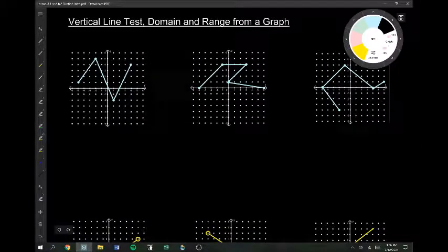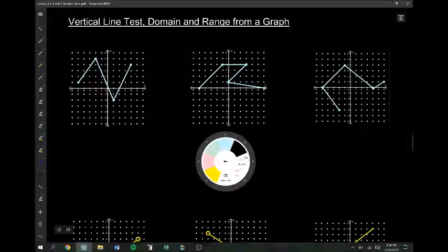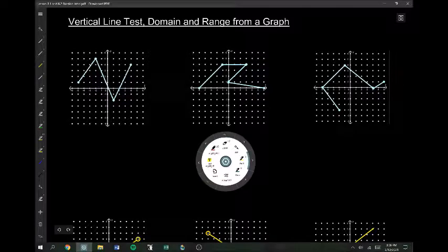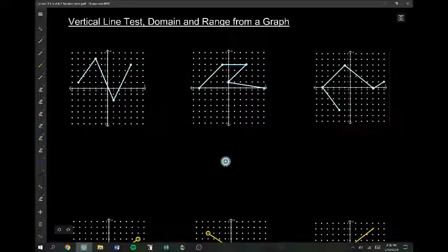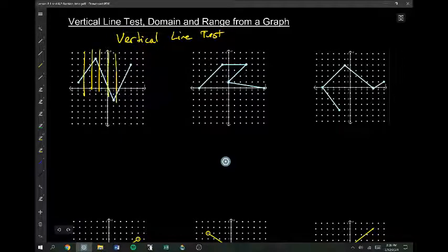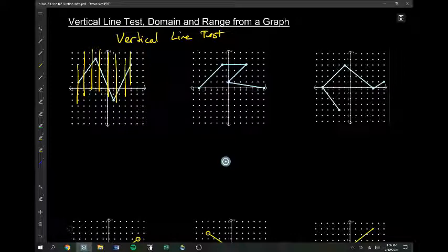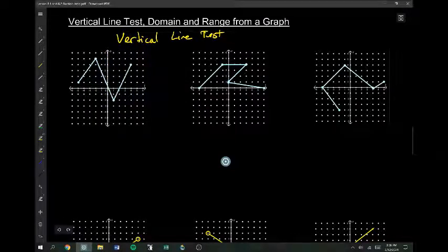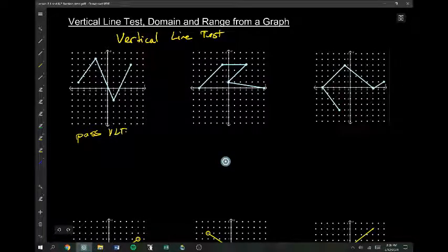Okay, the next thing we're going to do is talk about graphs specifically. You can tell if a graph is a function if it passes what's called the vertical line test. The vertical line test basically means if I draw a vertical line at any point on this graph, is there any point where a vertical line crosses my graph more than one time? In this graph, we pass the vertical line test because every vertical line hits the graph only once. So, therefore, it's a function.